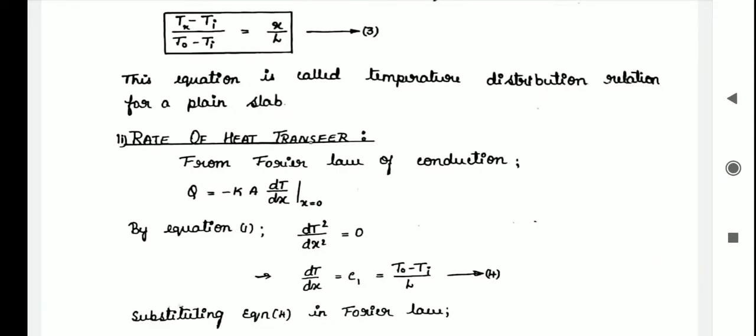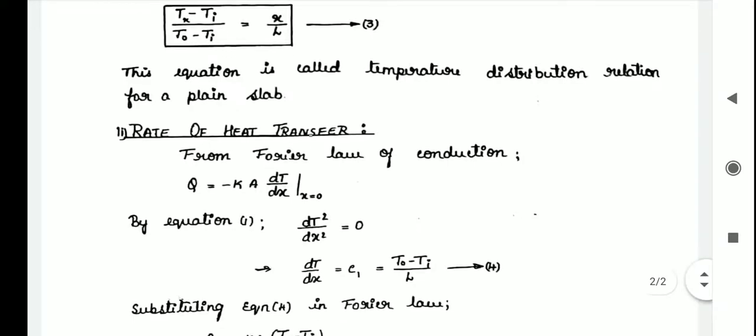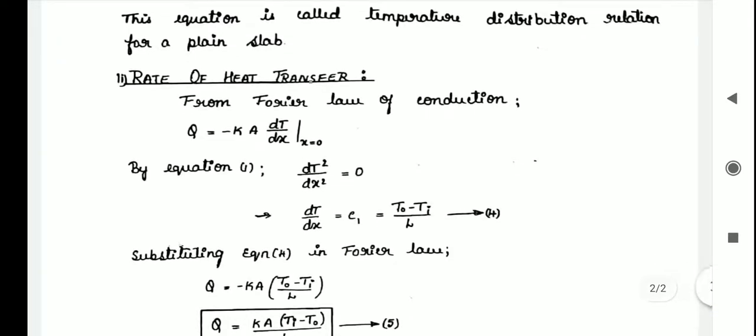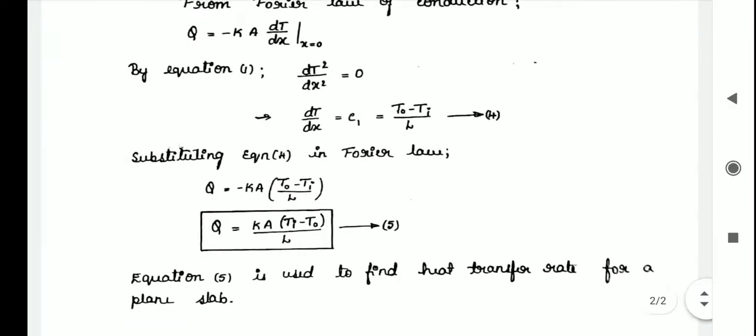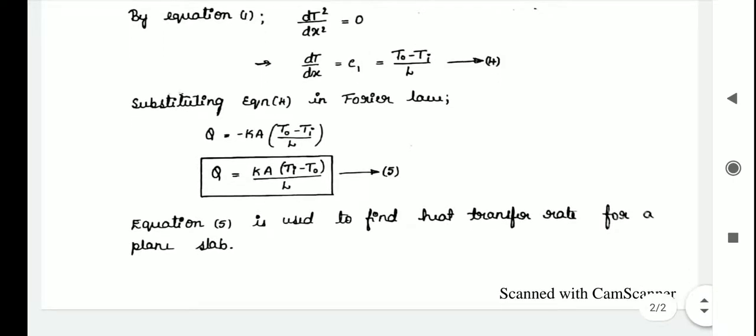To find the rate of heat transfer, we apply Fourier's law: q = −k·A·(dT/dx) at x = 0. From equation 1, integrating gives dT/dx = C1 = (To − Ti) / l, labeled as equation 4. Substituting into Fourier's law: q = kA(Ti − To) / l, labeled as equation 5.